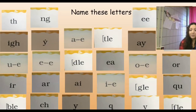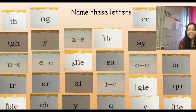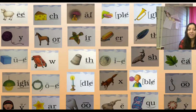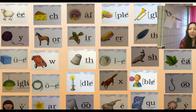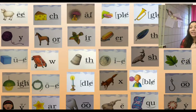So here are our letter name cards. Today we added this card right in the middle — digraph E-A. Very good. And on our sound cards, we added digraph E-A, but remember we say: leaf E, digraph E-A.